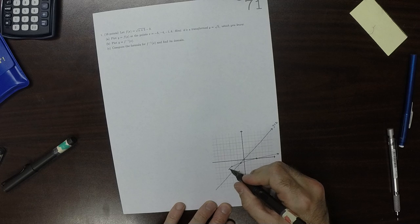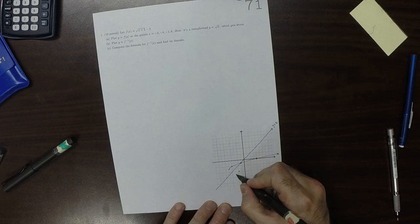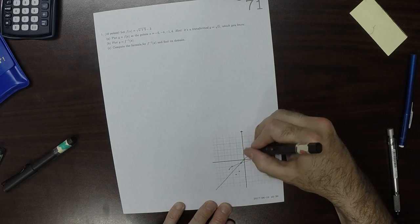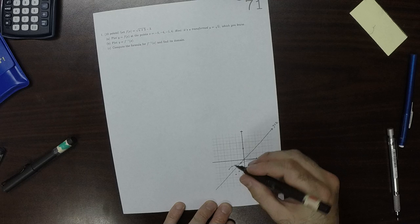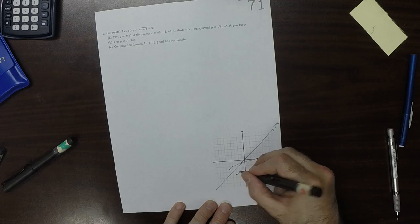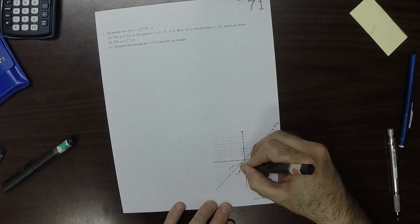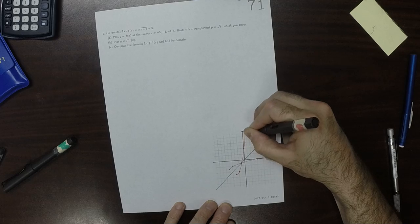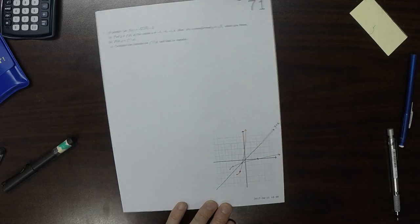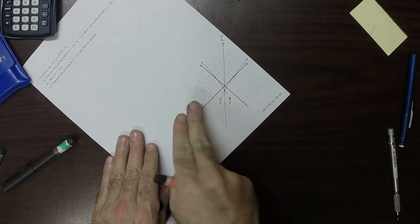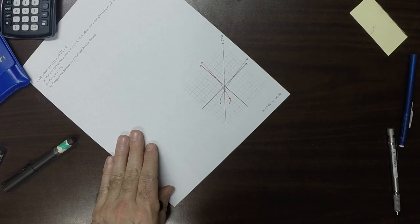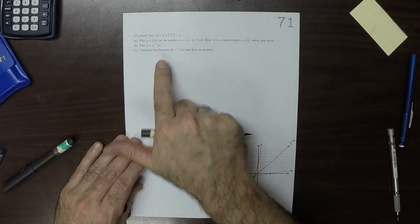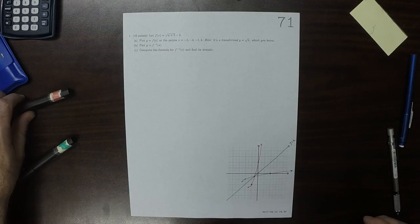And this one is 4, 0, so it goes to 0, 4. So the reflected plot is like that. So you can see, aside from the color, you can see the symmetry.